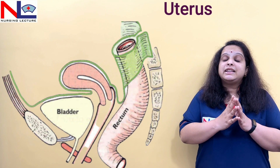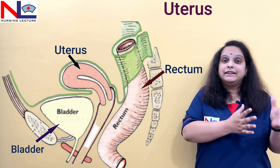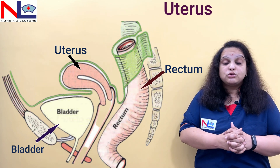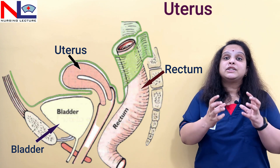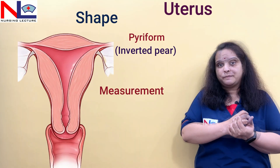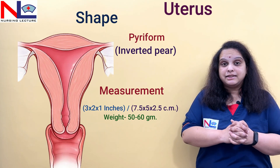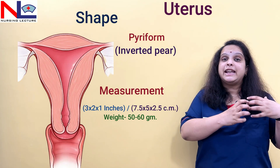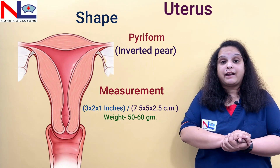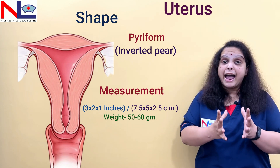The uterus is a pelvic organ which lies in the pelvic cavity. Anteriorly, in front, there is the bladder, and behind posteriorly there is the rectum — so it lies between these two structures. It is a hollow muscular organ which is pyriform shaped, that is an inverted pear-like structure. It plays a very important role in accommodation of the fetus during pregnancy, as implantation takes place in the uterus, allowing the fetus to grow through subsequent trimesters. It is the site for implantation and for the growth and nourishment of the fetus.